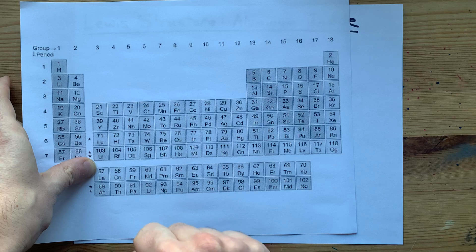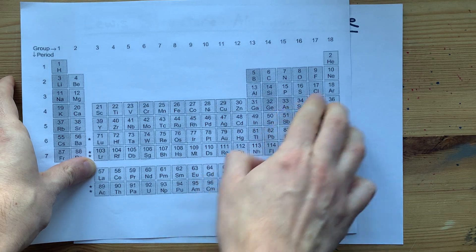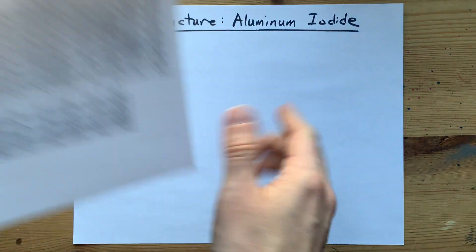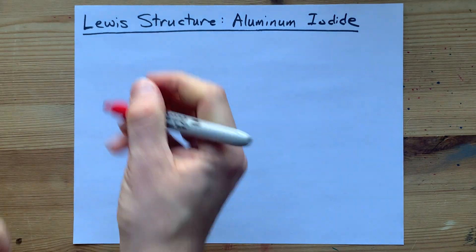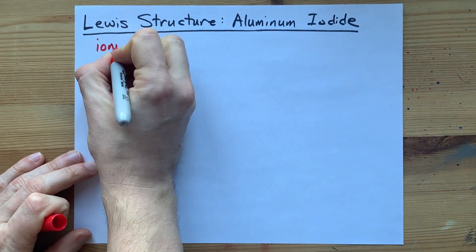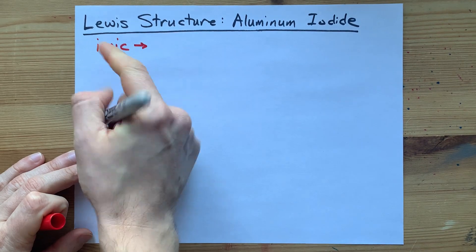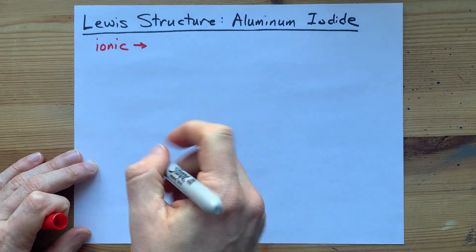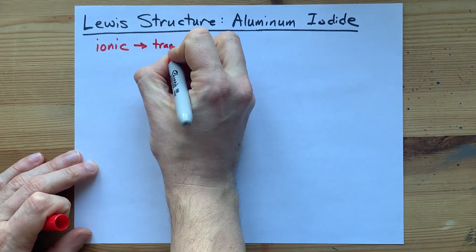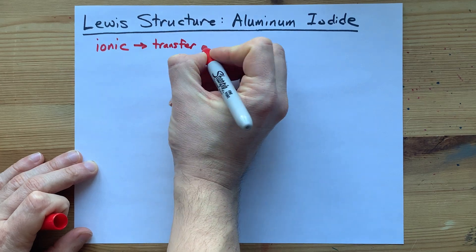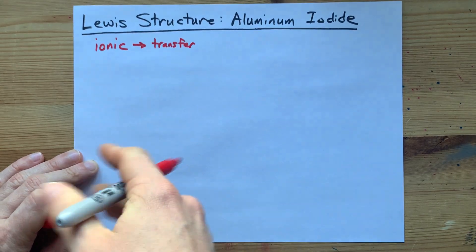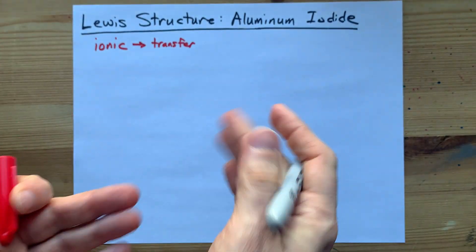Aluminum, a metal, and iodine on the right-hand side of the staircase is a non-metal. It's important to know that because a metal and a non-metal will combine to make an ionic compound. And that means that there is a transfer of electrons from one to the other, from the metal to the non-metal, because that's how it always works.